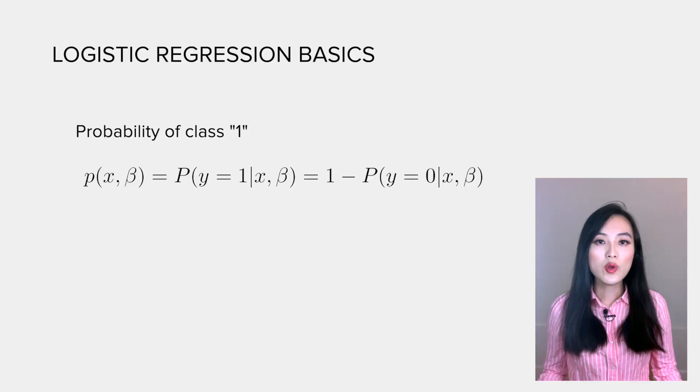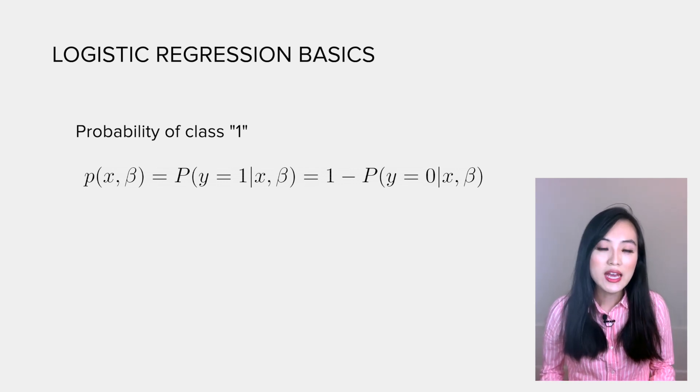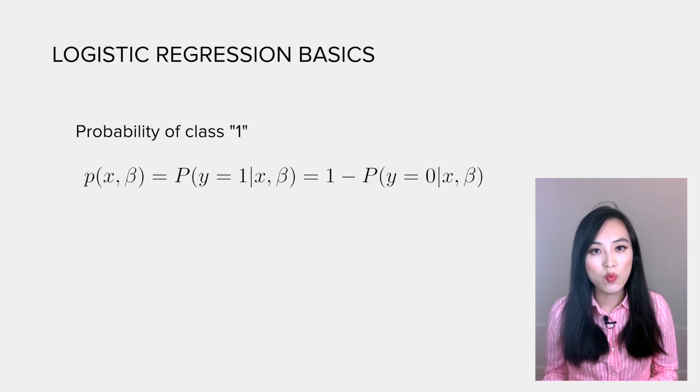I hope these two steps make sense to you. Now let's go over it again with more details and some equations. We could use P(x, beta) to represent the probability that y, the independent variable, is class 1 given x and beta.